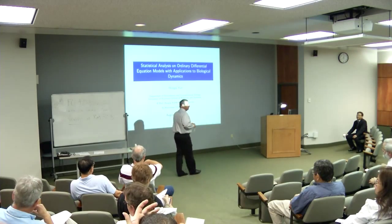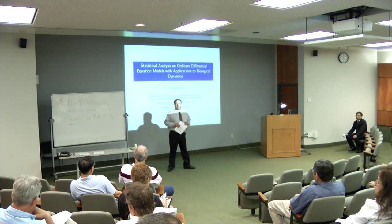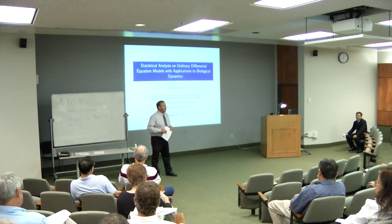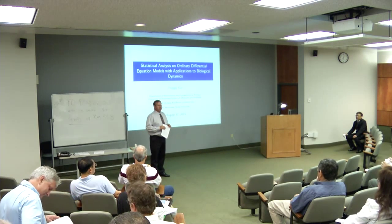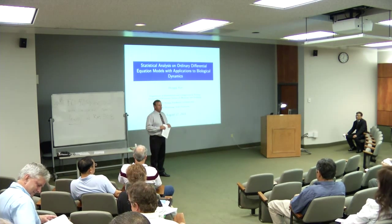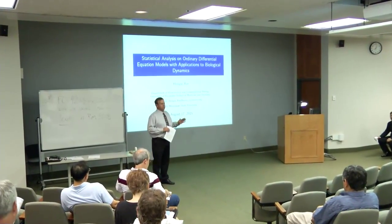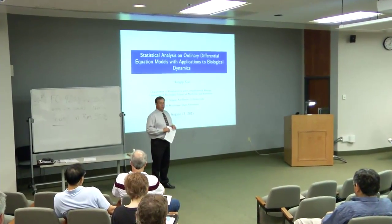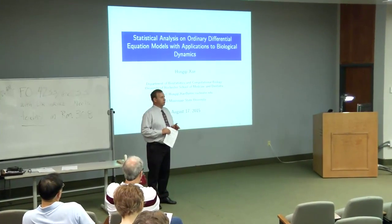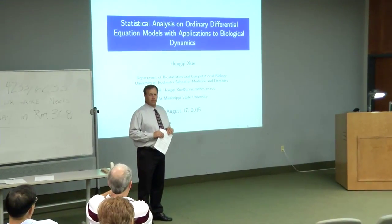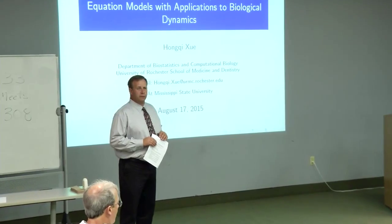I guess we'll go ahead and get started. I appreciate all of you coming this morning. As you know, we have three candidates coming in for the experimental statistician biometrician position that serves essentially within the division, especially the three colleges: forestry, ag and life sciences, and veterinary medicine, and the research team except for DRC and MATHIS.